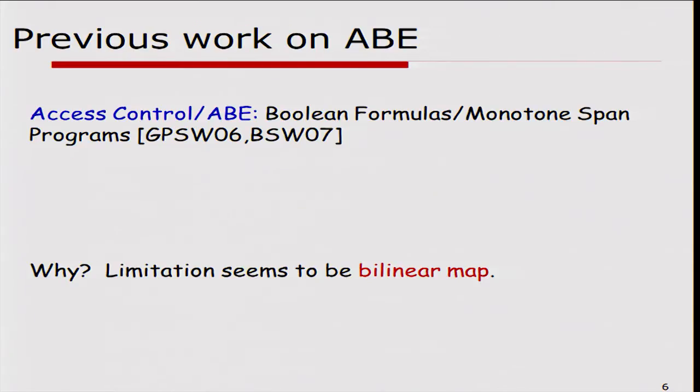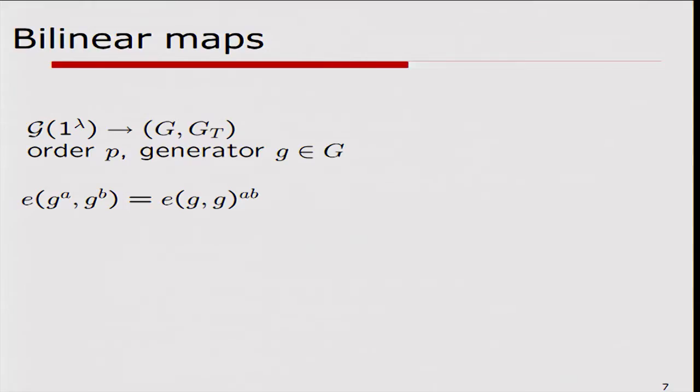There's been a lot of work in this area, but the key point is that the expressiveness of the functionality we can capture is actually limited to Boolean formulas, and the limitation seems to be bilinear maps. I'm going to give the construction for formulas from bilinear maps, tell you what goes wrong if you try to use those constructions directly, and show that extending those constructions one can get the construction for circuits — it's a very direct analog.